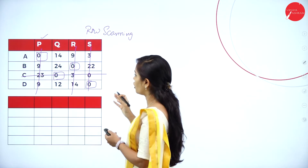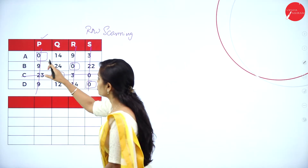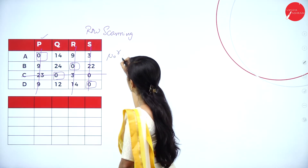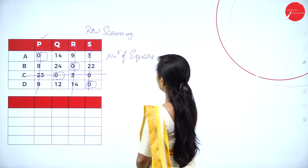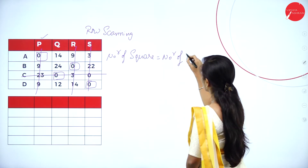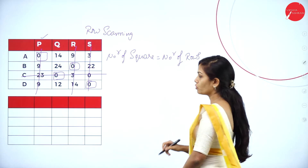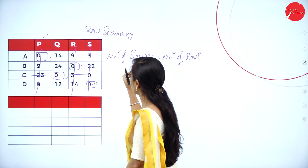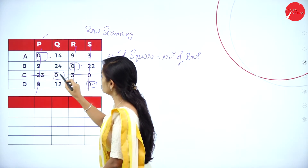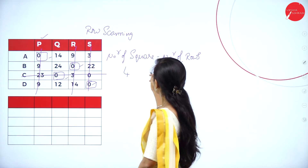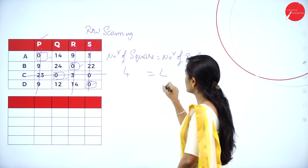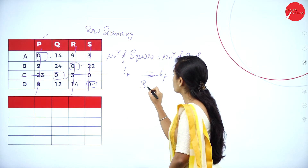After row scanning and column scanning, find the number of assigned zeros — that is, the number of square-marked positions. The number of square marked should equal the number of rows. Here, 1, 2, 3, 4 — four zeros have been assigned. The number of rows is also 4, so 4 equals 4. It is a square matrix.